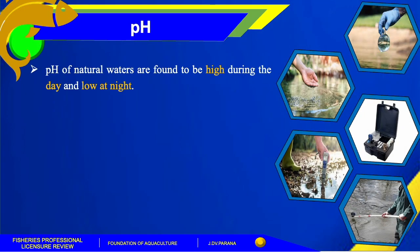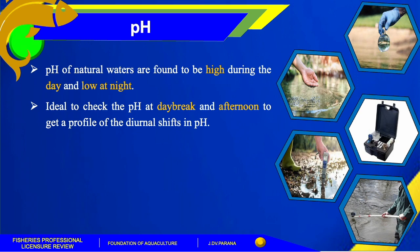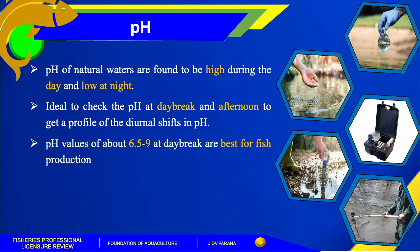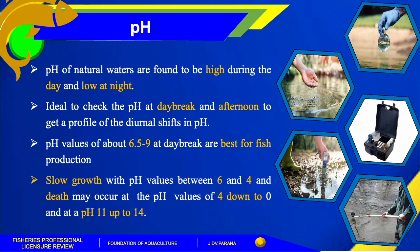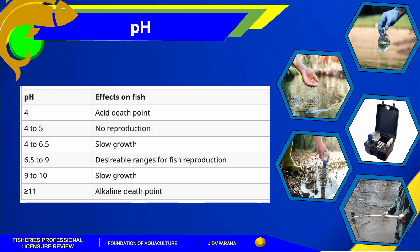Moreover, the pH of natural waters is found to be high during the day and low at night. This variation is due to the large influence of carbon dioxide concentration on pH. Carbon dioxide dissolves in water to form carbonic acid, a weak acid, which lowers the pH. The ideal time to check pH is at daybreak and afternoon to get a profile of the diurnal changes in pH. pH values of about 6.5 to 9 at daybreak are best for fish production. pH between 6 and 4 slows the growth of aquatic organisms, while pH values of 4 down to 0 and pH 11 up to 14 may lead to their death. You need to be familiar with those values and their effects on fish.